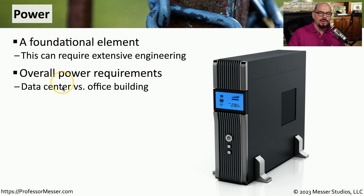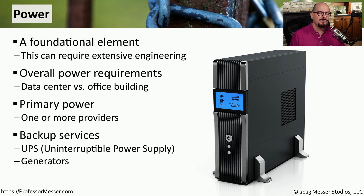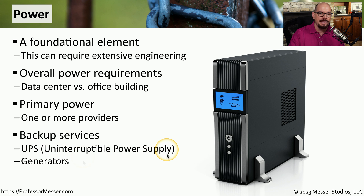For example, if you have a data center, your requirements for power will probably be very different than the power requirements for an office building. For most organizations there is a single primary power provider for your particular geography, but in a very populous area you might have multiple options for bringing power into your facility. There may be times when primary power is simply not available and you may need some type of backup — in those cases you might want to look at a UPS, which is an uninterruptible power supply, or something like a generator that can provide some or all of your organization's power requirements.